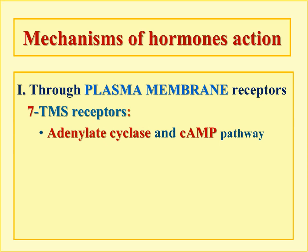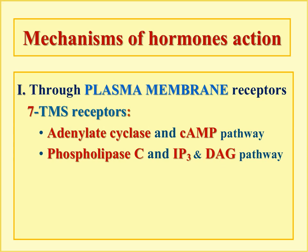The two main pathways are the adenylate cyclase and cAMP pathway, and the phospholipase C pathway. Plasma membrane receptors are designed for hydrophilic hormones, which are dissolved in water and cannot dissolve in the phospholipid membrane, and therefore cannot pass inside the cell — they need to use these receptors.